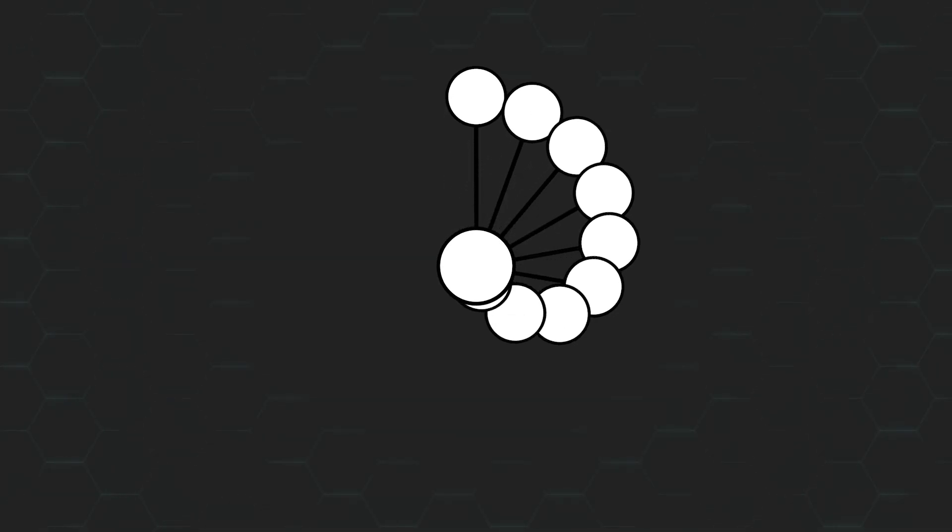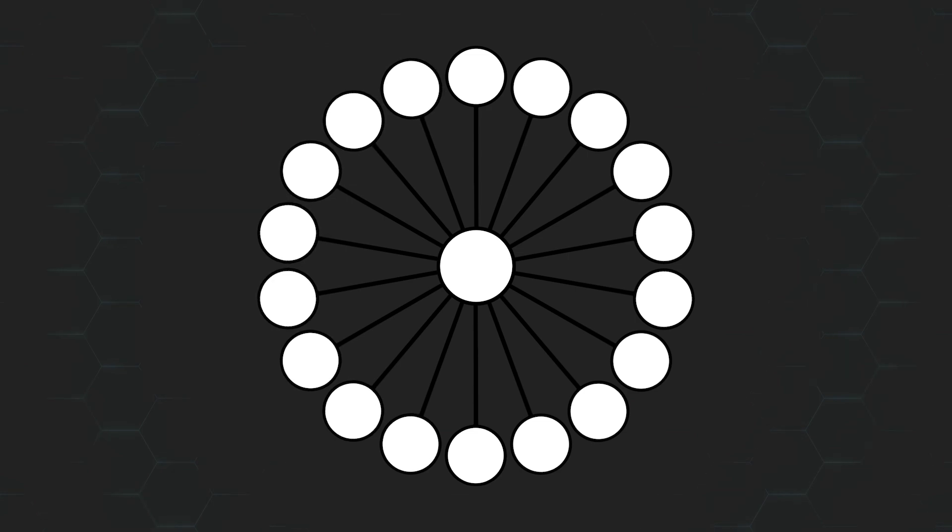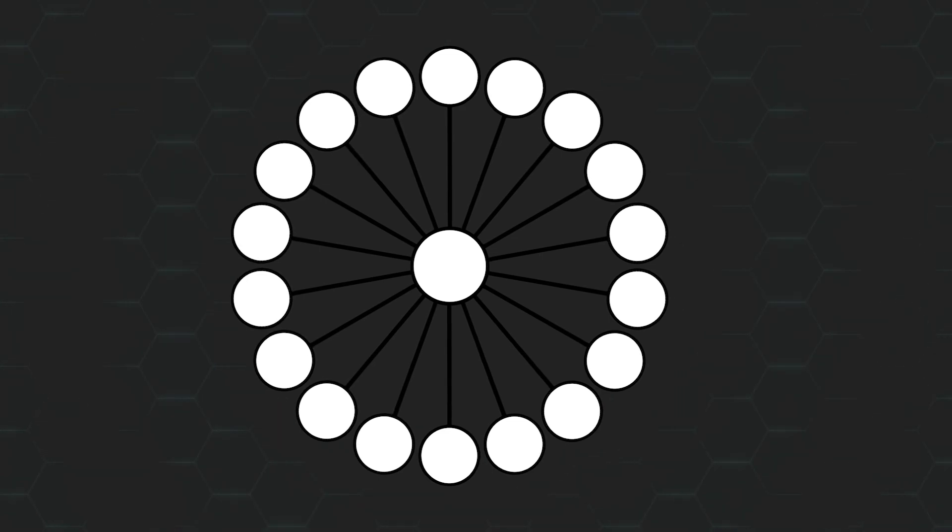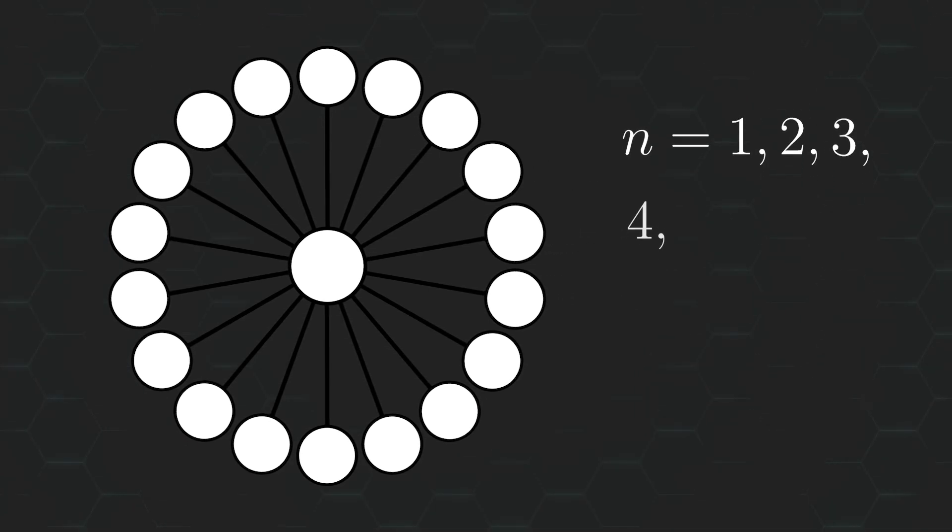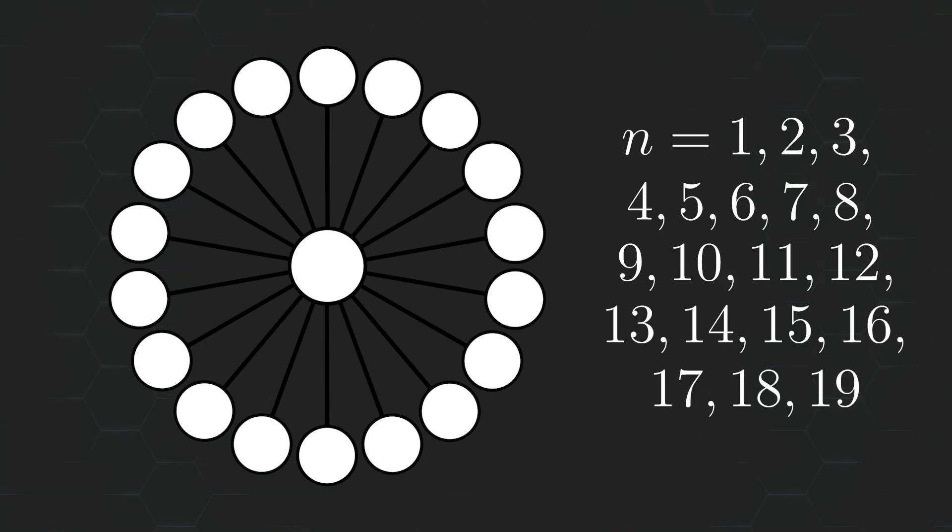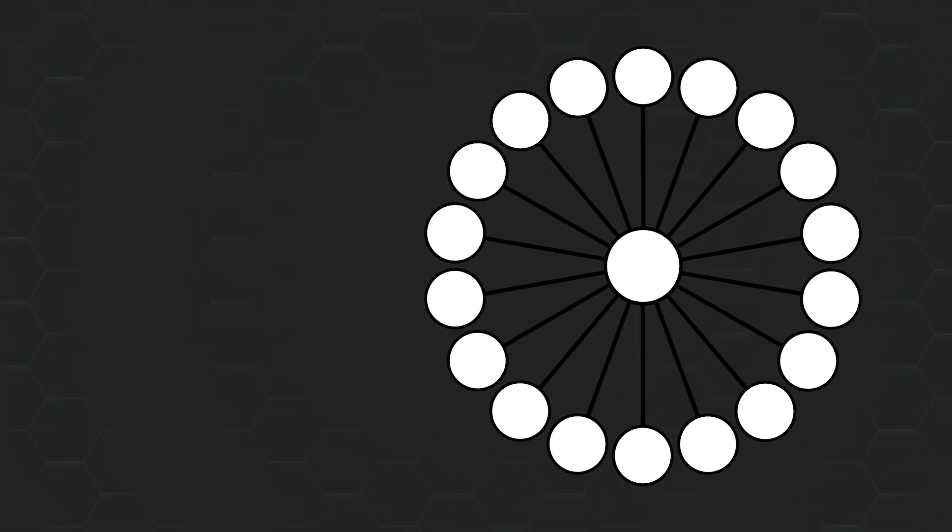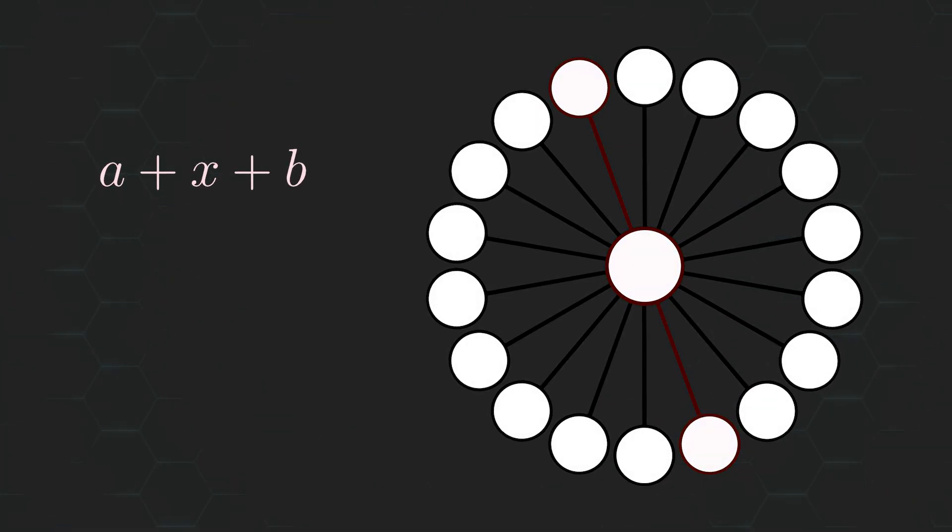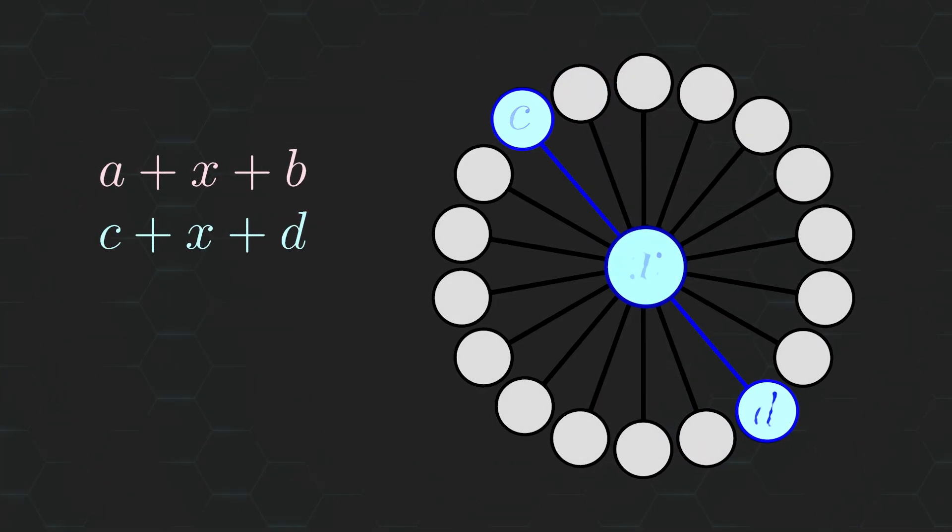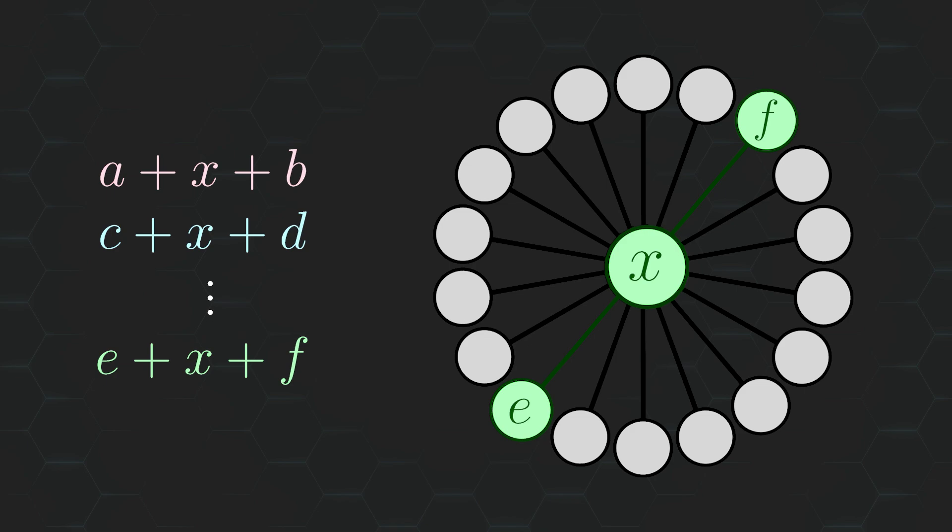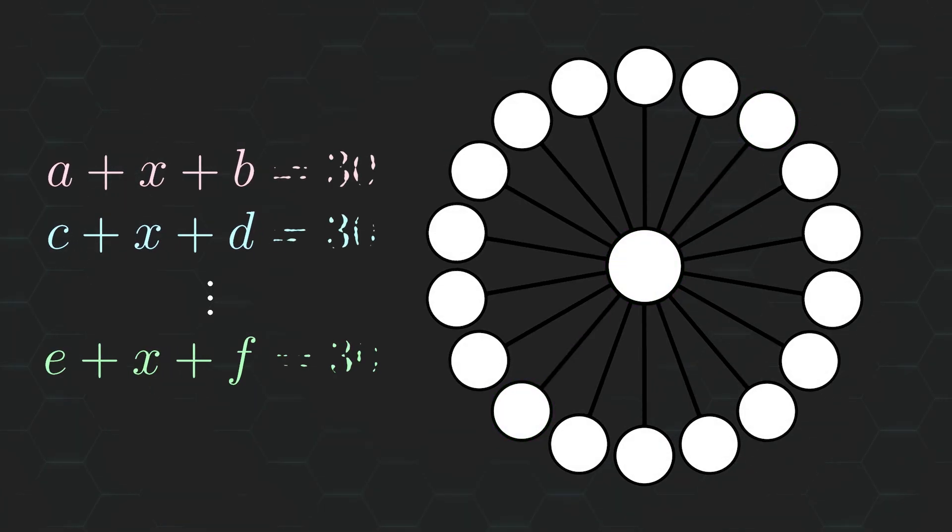Let's take a circle and connect it to 18 other circles to create a network. The goal is to fill up all of these circles with integers ranging from 1 to 19 without repeating any of them, in such a way so that whenever we add up the numbers inside three connected circles that are all lying on a straight line, we get the same total value every time. That value being 30.